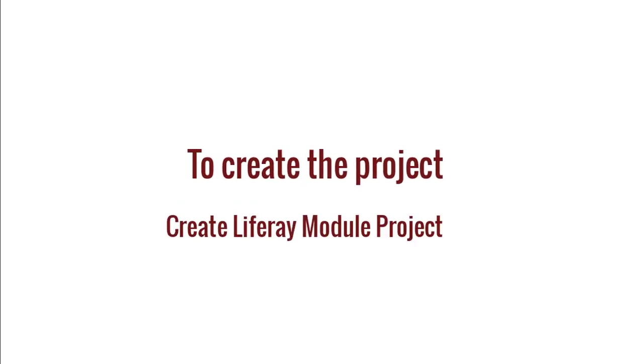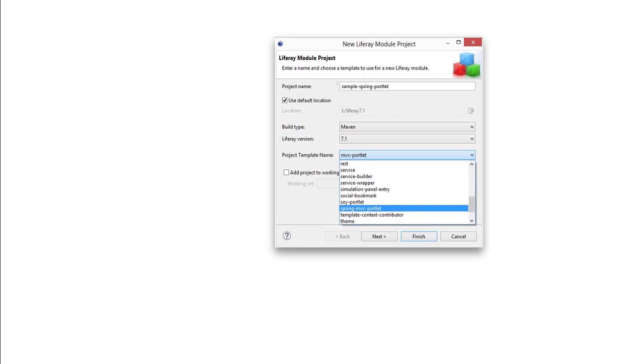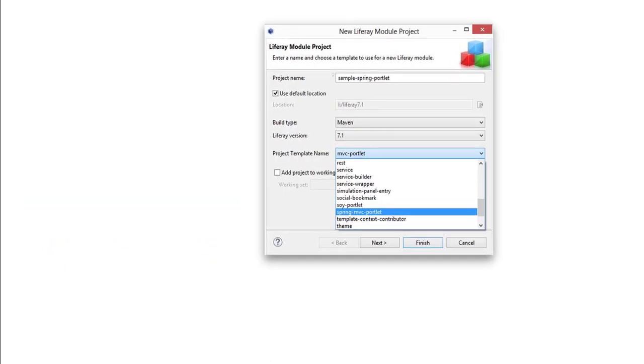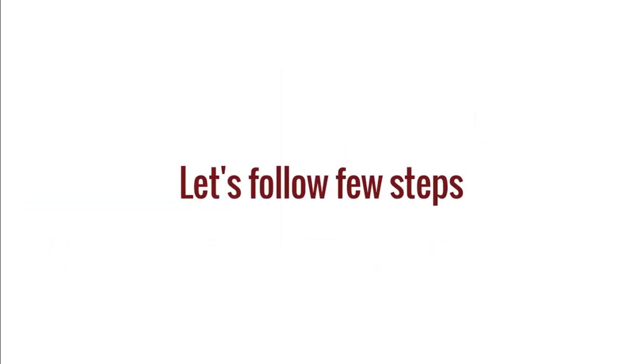To create the project, go to Eclipse and create the Liferay module project using Spring MVC as a project template. Let's follow a few steps to create the project.